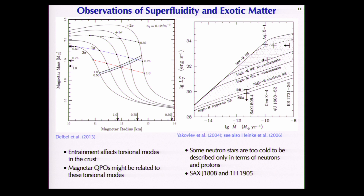Entrainment also affects torsional modes. Magnetars have these giant flares, which are thought to be seismic events — you're thinking about twisting the neutron star crust. Entrainment is important in dictating what the frequency of these modes are in the crust. This is a calculation we did earlier this year showing that the mass and radius constraints from crustal oscillation modes depend on the amount of entrainment, parameterized here by a dimensionless parameter which varies from one-half to one.